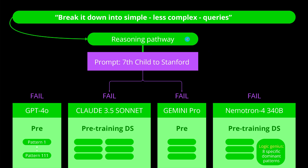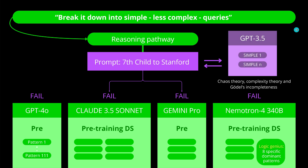You might say: give it another reasoning pathway — break it down into simpler, less complex queries, go through each simpler query step by step, and add everything up to reach a conclusion. I've even seen system implementations where, before sending it off to a cloud provider, they have a small system like GPT-3.5 whose only task is to take the human language prompt and reformulate it into much simpler, more machine-readable queries. But you can only do this to a certain extent — we have complexity theory, chaos theory, and Gödel's incompleteness. So this system might also fail, and yes, it fails on my particular prompt too.